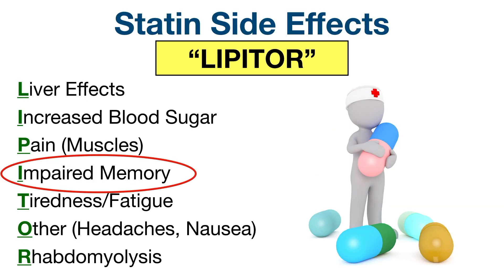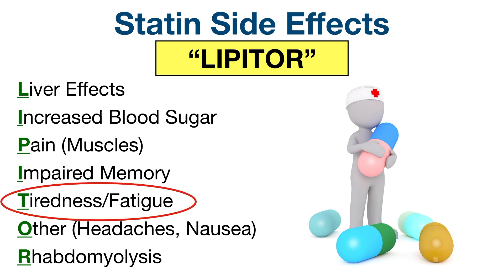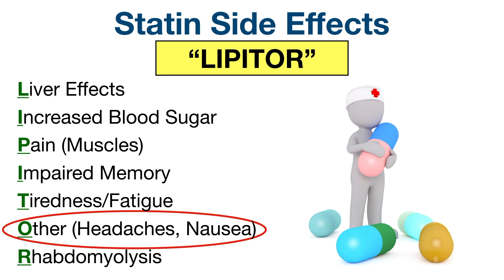The next side effect is another I, which stands for impaired memory. Some people have reported mild memory loss and confusion while taking a statin, but there's not much supportive data to suggest statins are the cause. This side effect is often labeled as non-serious and reversible. Next, the T stands for tiredness, as some people have reported increased fatigue while taking a statin. Finally, the O stands for other — a catch-all category for other mild side effects like headaches and nausea.